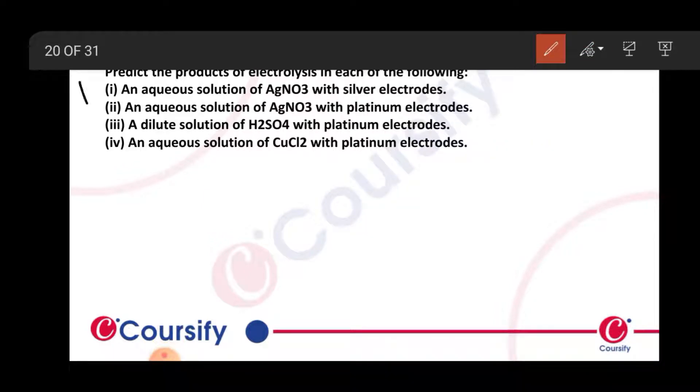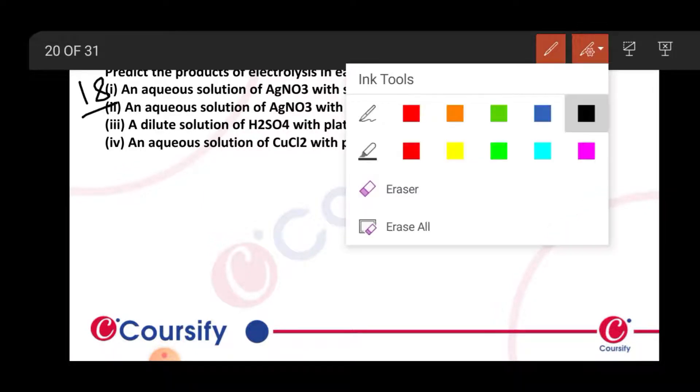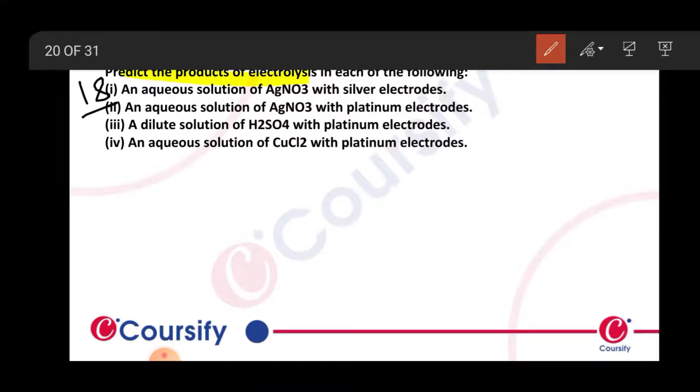Question number 18: Predict the products of electrolysis in each of the following. (i) An aqueous solution of AgNO3 with silver electrodes. (ii) An aqueous solution of AgNO3 with platinum electrodes. (iii) A dilute solution of H2SO4 with platinum electrodes. (iv) An aqueous solution of copper chloride with platinum electrodes.